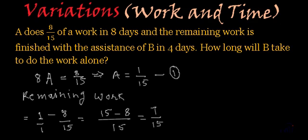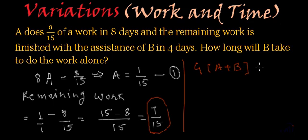7 by 15 part of the work is still remaining. Right? And what they say? They say that A and B together, if they work for 4 days, they will finish this job. So that means 4 times A plus B, they are able to do this remaining job which is 7 by 15. Right?